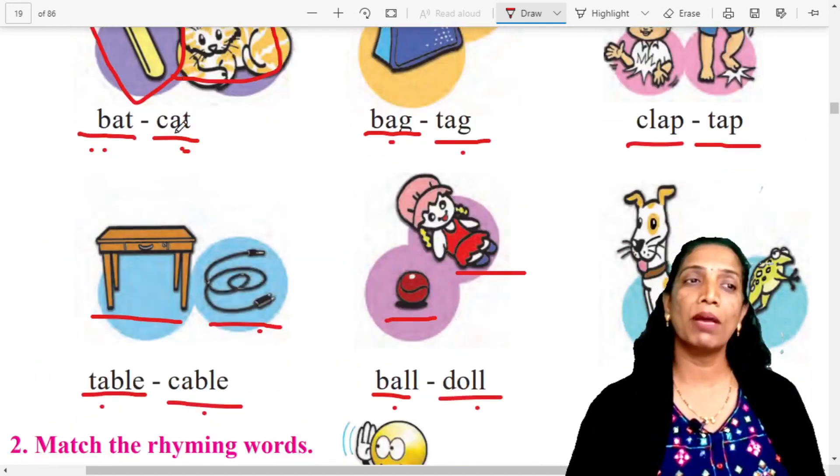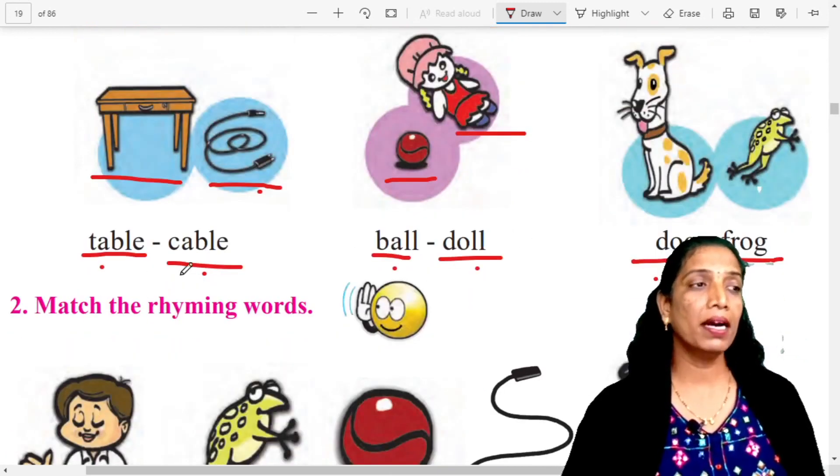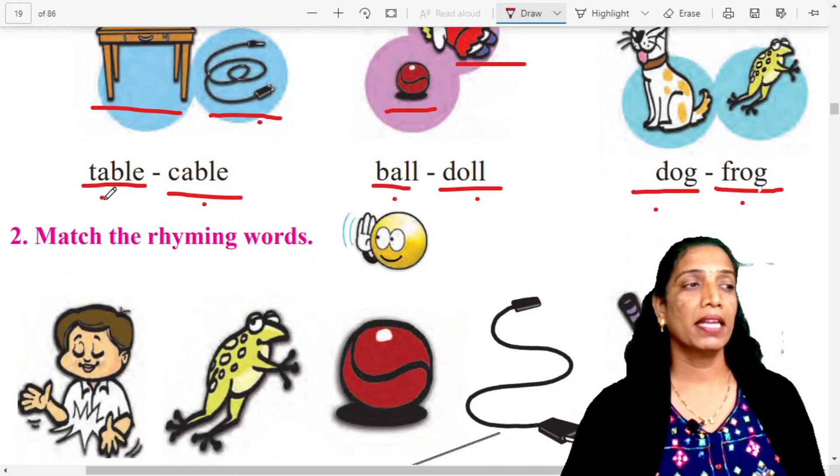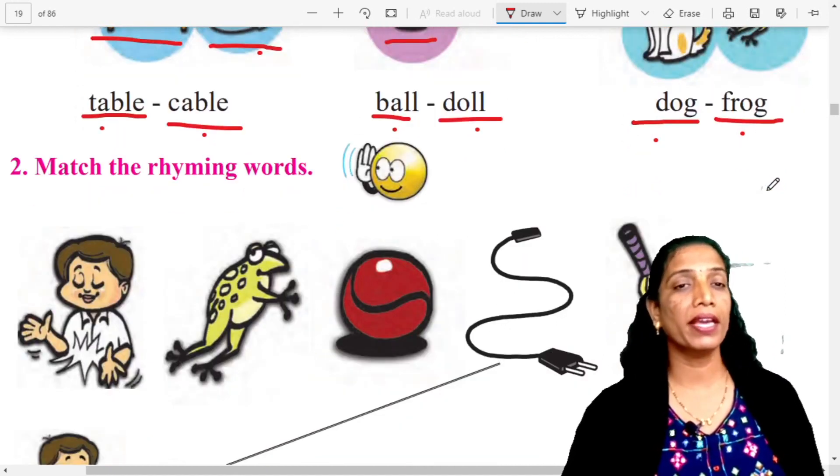Repeat after me. Bat, cat. Bag, cat. Clap, cat. Table, cable. Table, cable. Ball, doll. Dog, frog.